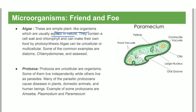Algae have an aquatic nature and contain chlorophyll, so they can make their own food. Examples include kelp and seaweeds. Protozoa are unicellular organisms that can live independently or as parasites.